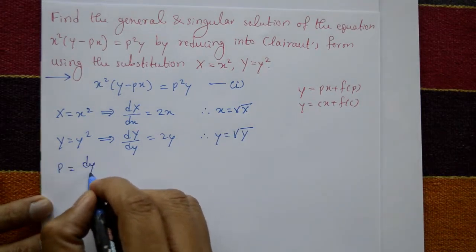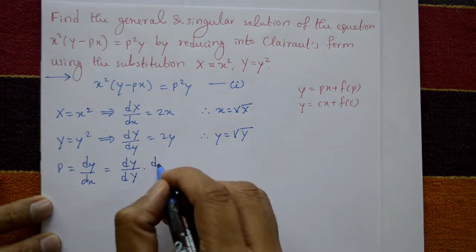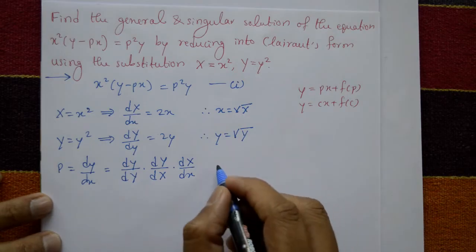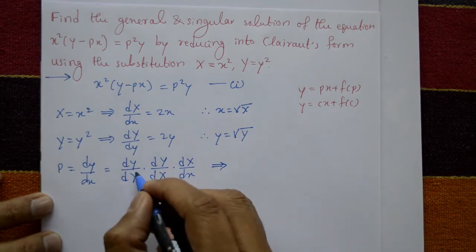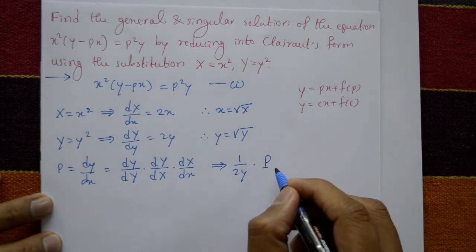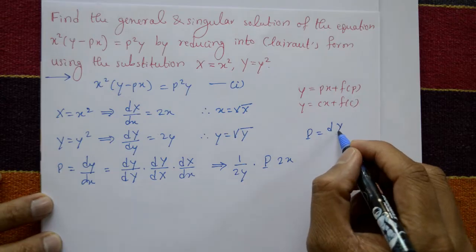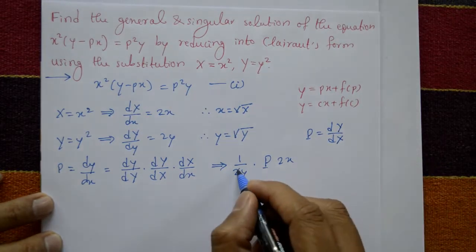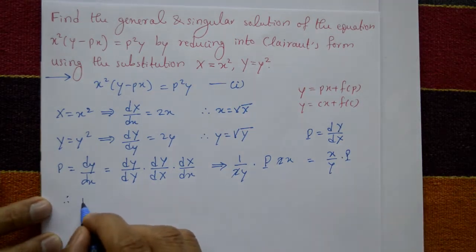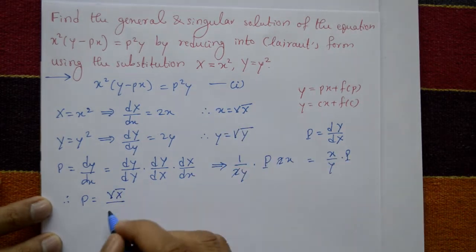Small p, which is dy/dx, can be written using the chain rule as: dy/dY into dY/dX into dX/dx. This equals one over 2y into capital P into 2x. The 2's cancel, giving small p equals x over y into capital P. Substituting x equals root of capital X and y equals root of capital Y gives small p equals root(X) over root(Y) into capital P.